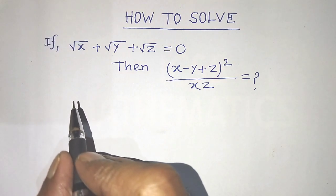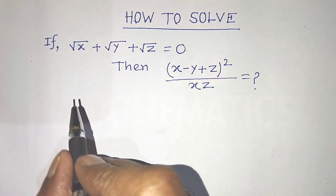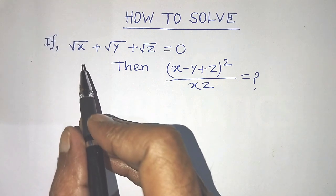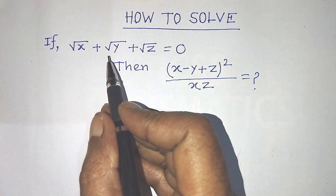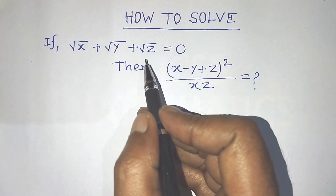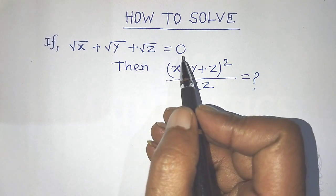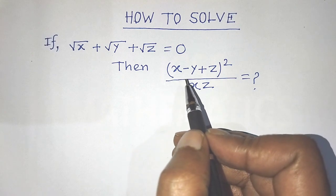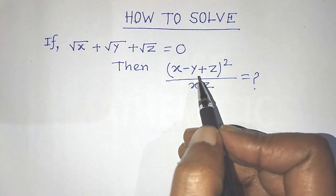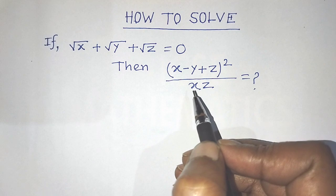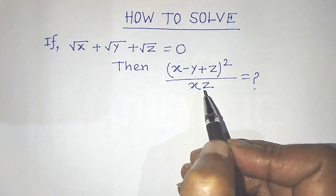Hi guys, welcome back to my channel, Ali Masflok. Today our question is: if root of x plus root of y plus root of z is equal to 0, then find the value of (x minus y plus z) whole to the power 2 over x into z.